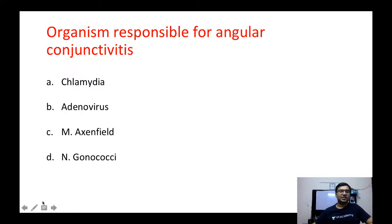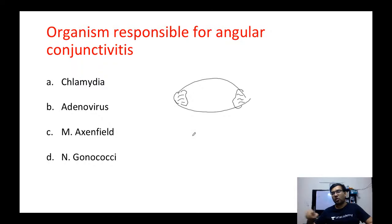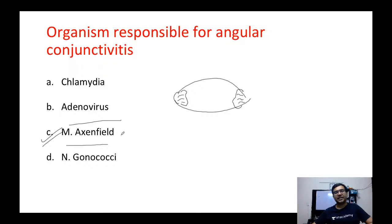Next question: organism responsible for angular conjunctivitis. Angular conjunctivitis features maceration of tissues at the angles of the eye due to formation of proteolytic enzymes. This is a characteristic of Moraxella lacunata bacteria, though Staph can also cause it.